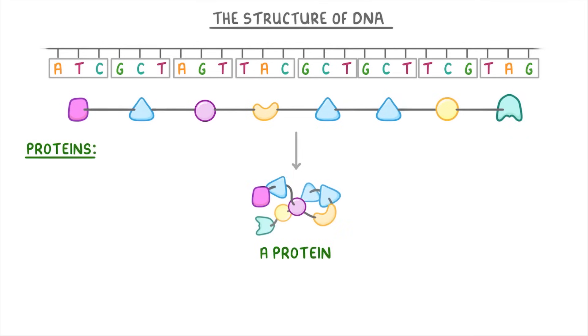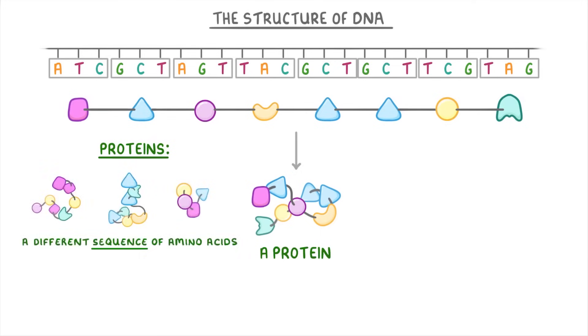Now, the important thing about proteins is that because each type is made from a different sequence of amino acids, each type will have a unique shape, which allows it to carry out a particular function. So within each of our cells, we have loads of different proteins that carry out loads of different things.